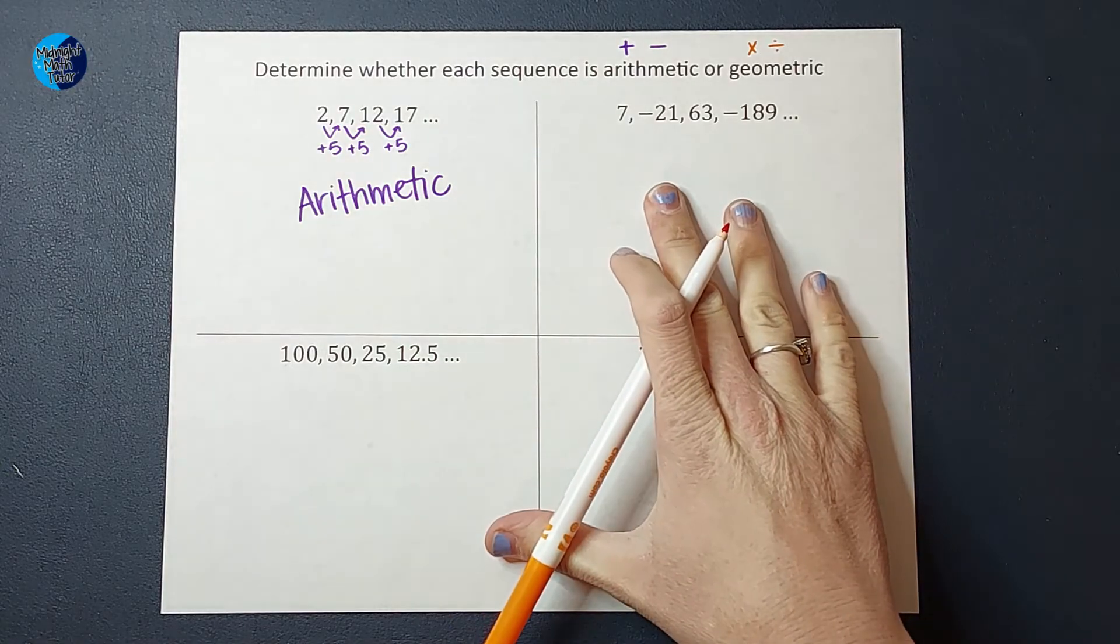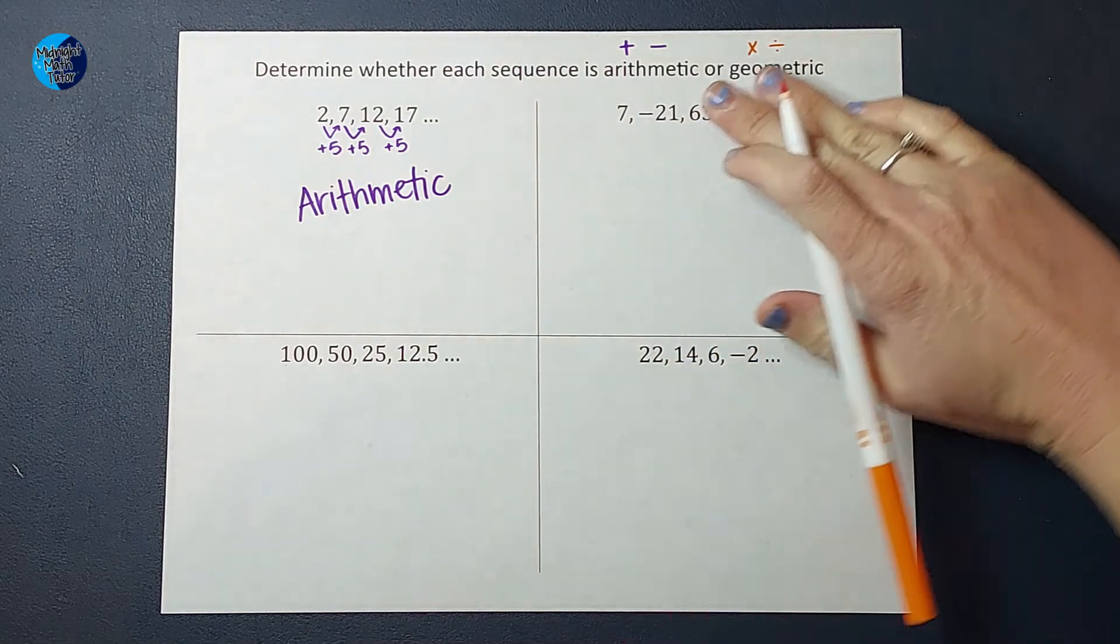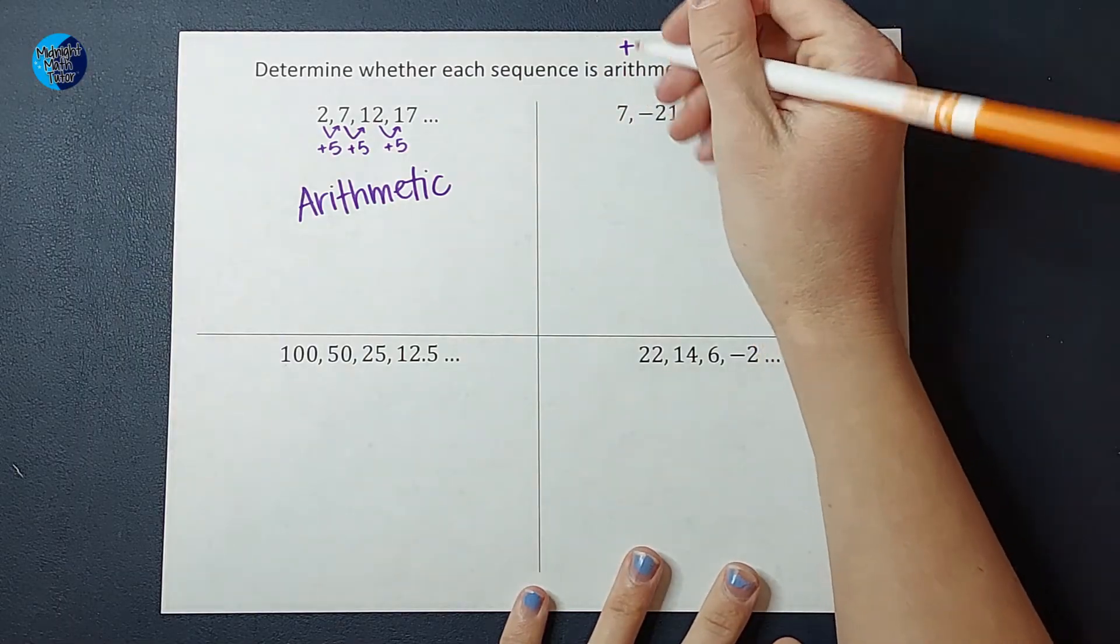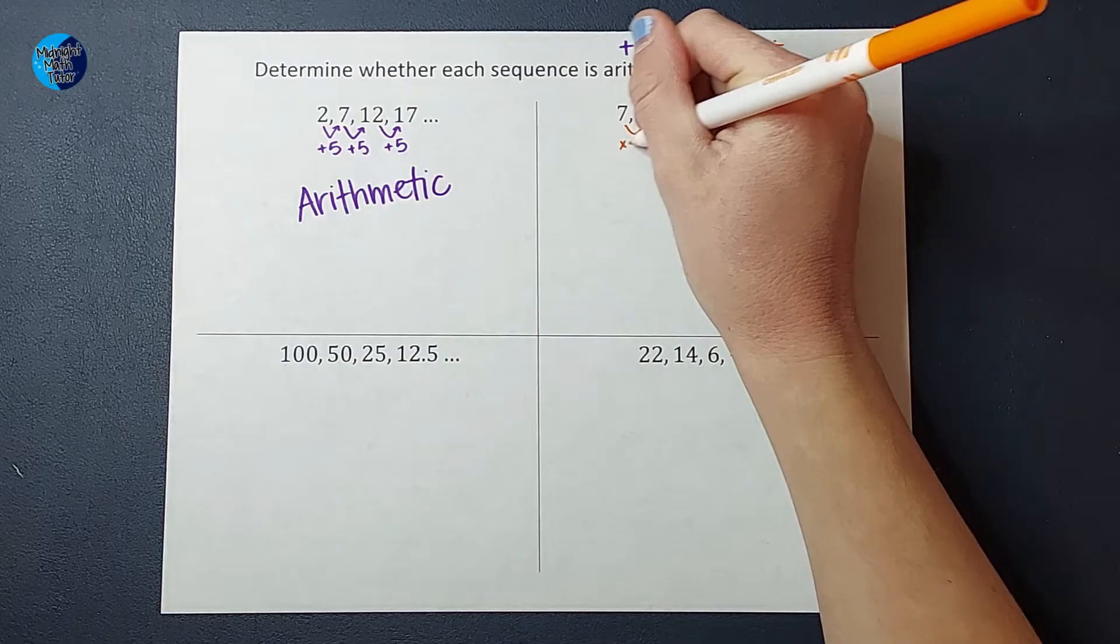Let's go ahead and look at this next one. Look at it for a minute and see if we can figure out what is happening. Well, when I just look at the first two numbers, I could think, okay, we are multiplying by a negative three.